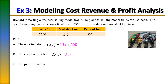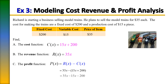For the profit function, we take the revenue function and subtract the cost function. So P(x) = 35x − (15x + 200). Because that group has a negative in front of it, it becomes negative 15x minus 200. Combining like terms gives P(x) = 20x − 200, which is the profit function.